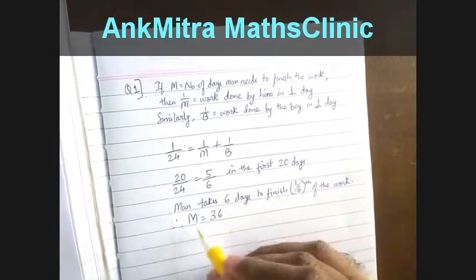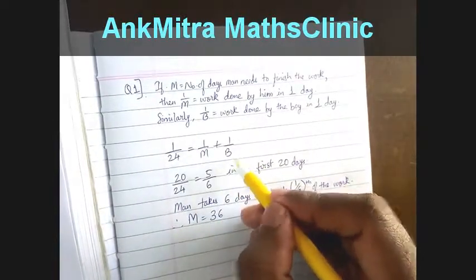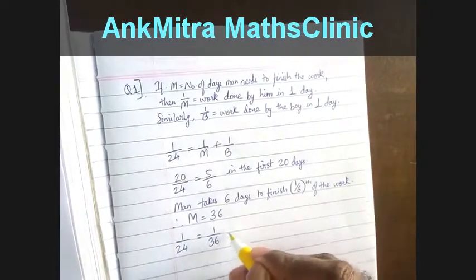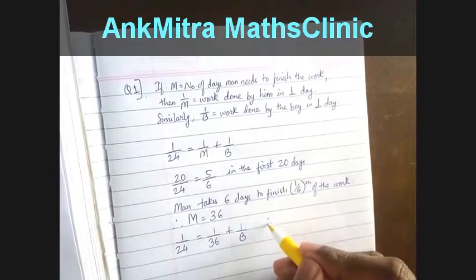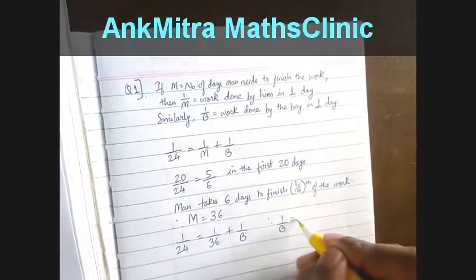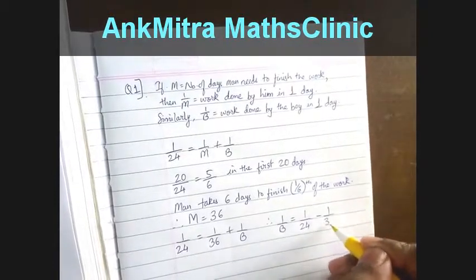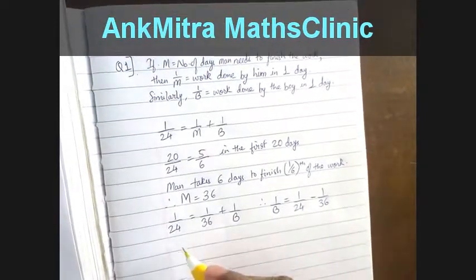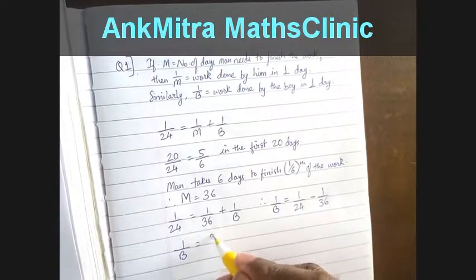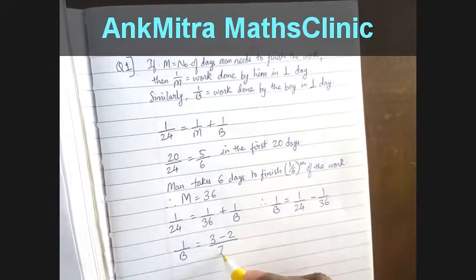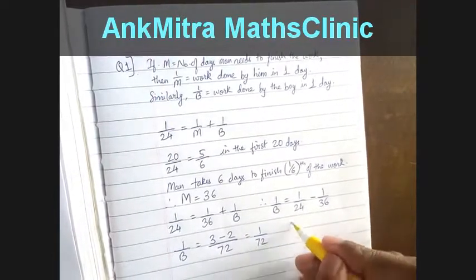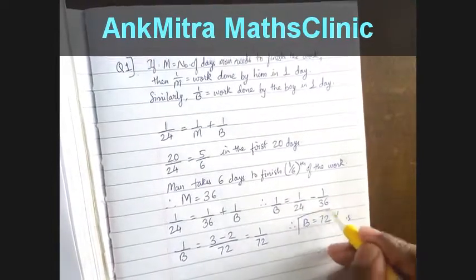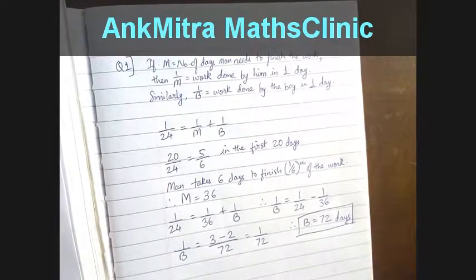So we will use this value of m in this equation to find the value of b. It will be 1 upon 24 is equal to 1 upon 36 plus 1 upon b, which gives us 1 upon b is equal to 1 upon 24 minus 1 upon 36. Using 72 as the LCM for these 2 numbers we get 1 upon b is equal to 3 minus 2 upon 72, which is equal to 1 upon 72. Therefore, b is equal to 72 days. That means the boy needs 72 days to finish the entire work alone.